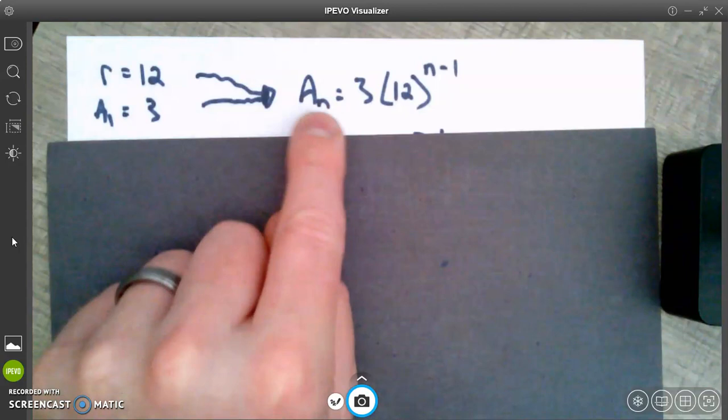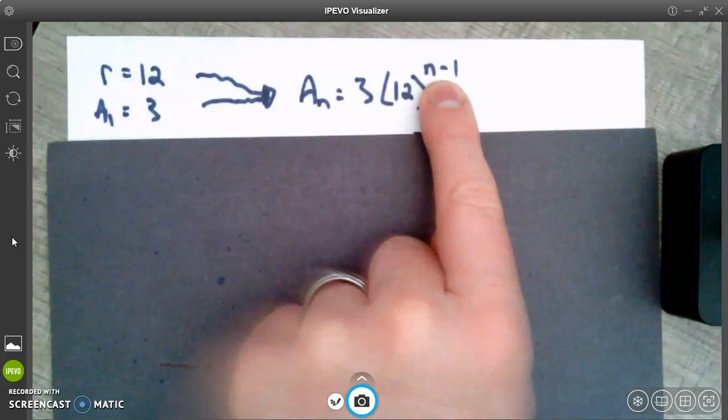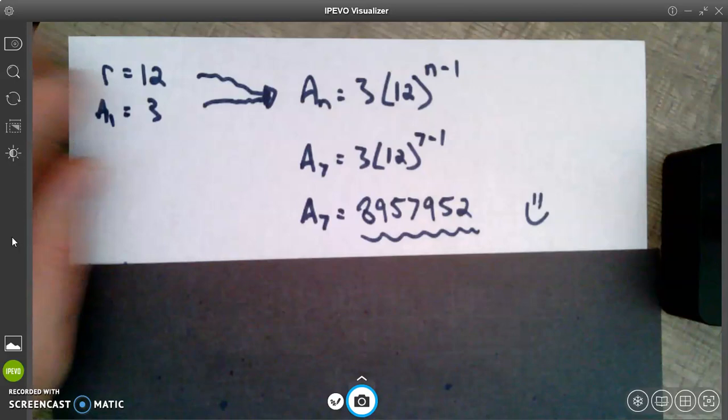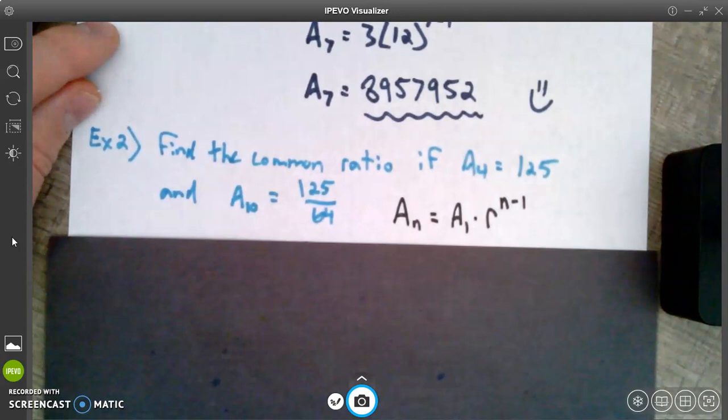So that's our nth term formula. So the last of the second part of the question asks you to find the seventh term of the sequence. So I want to find a sub 7. I'm going to take the n out. I'm going to put a 7 in its place. Well, if I do it over here, I have to do it over here as well. So I plug in 7s, jam in my calculator, and I'm dancing. Big term there. That's okay. The common ratio was 12. So that's kind of expected. Let's step up our game a little bit. That's a little bit too easy.